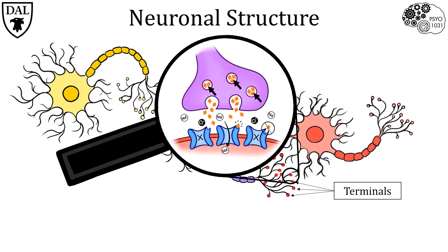If we focus in now at the tip of the axon terminal, we see vesicles releasing their neurotransmitter contents into the space between the terminal of the sending neuron and the dendrite of the receiving neuron. This space is called the synaptic cleft. The liberated neurotransmitter is then able to bind to receptors on the other side of the synapse and pass the message onto the next neuron.